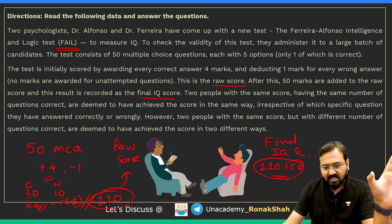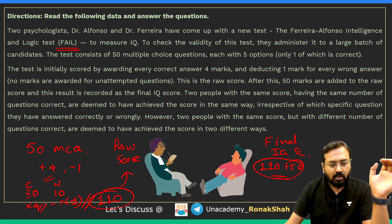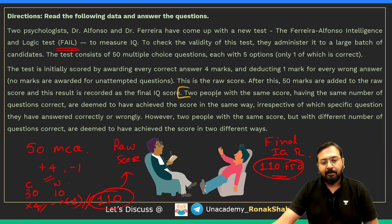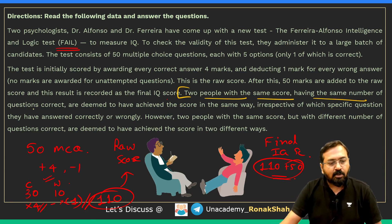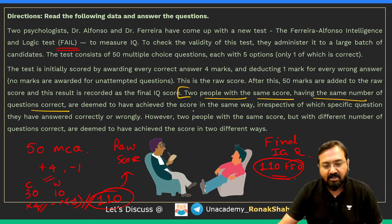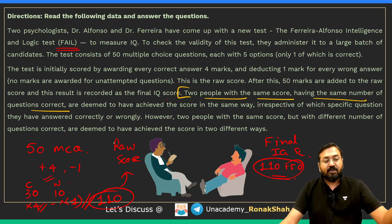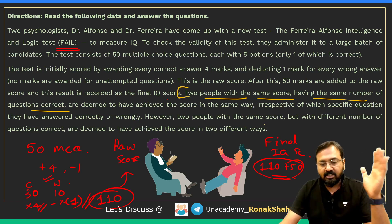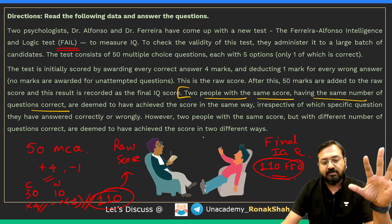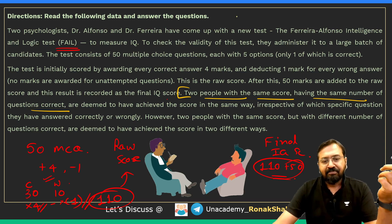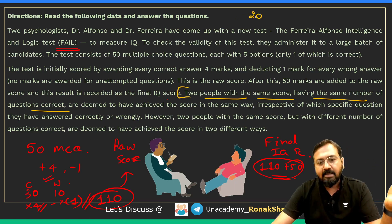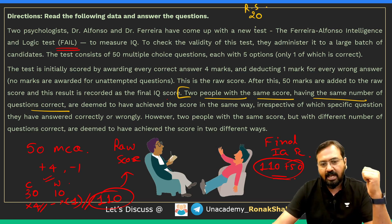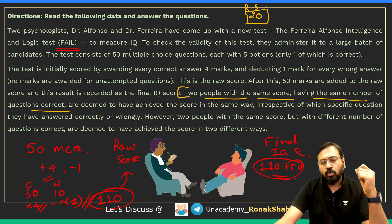The most important part of the set is the last few lines, which confuse most students. Two people with the same score having the same number of questions correct are deemed to have achieved the score in the same way, irrespective of which specific questions they answered correctly or wrongly. However, two people with the same score but with a different number of questions correct are deemed to have achieved the scores in two different ways.